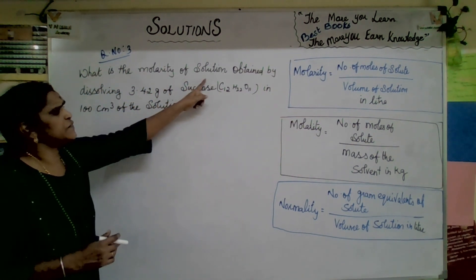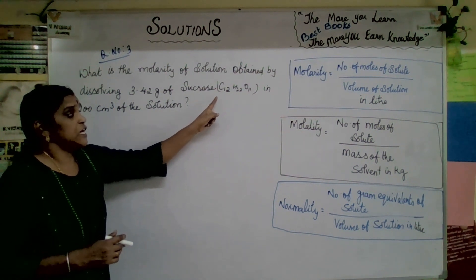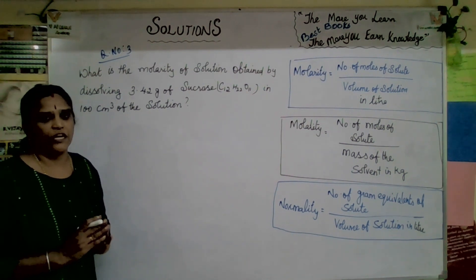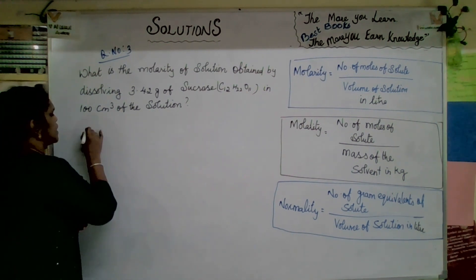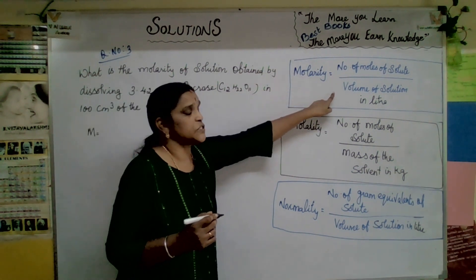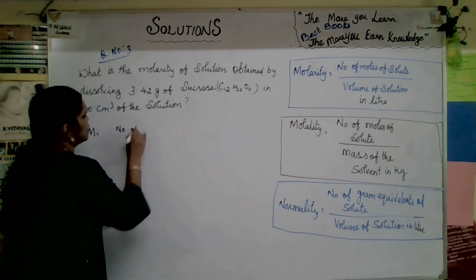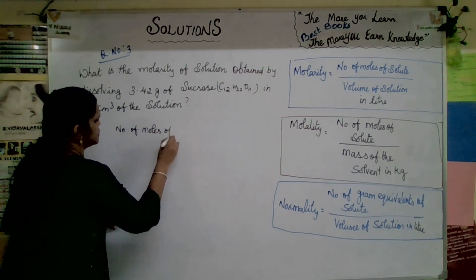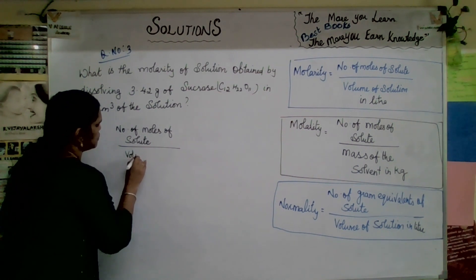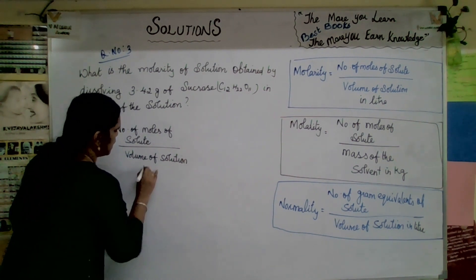What is the molarity of the solution obtained by dissolving 3.42 grams of sucrose, C12H22O11, in 100 cm³ of the solution? Now we have to find out the molarity. Molarity equals number of moles of solute divided by volume of solution in litres.